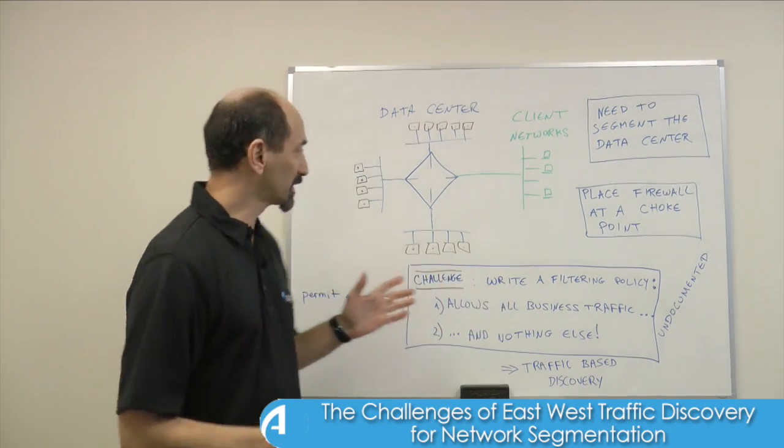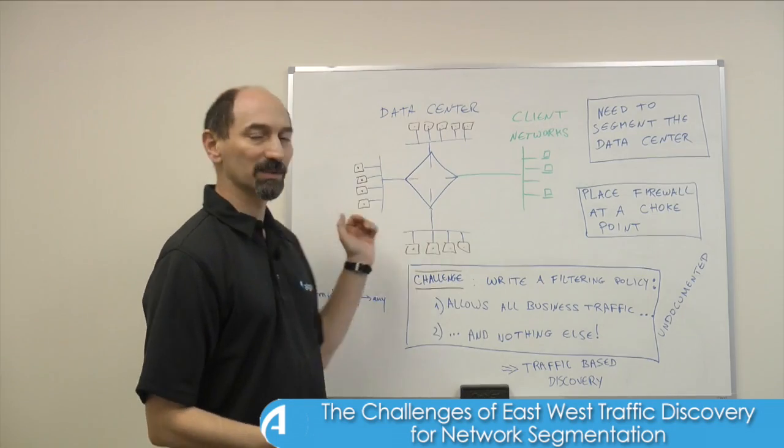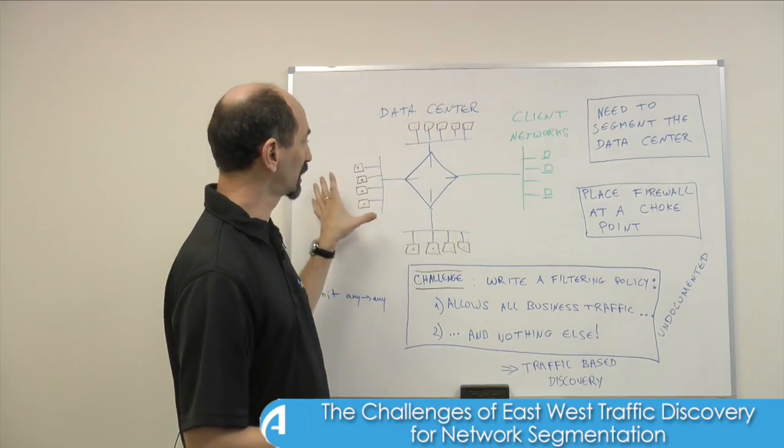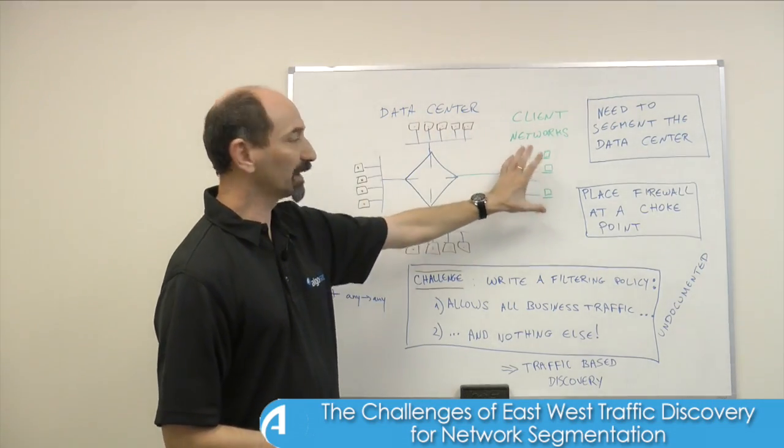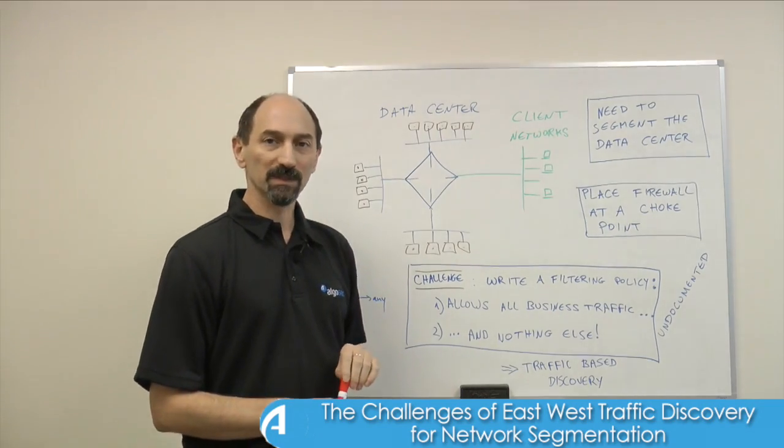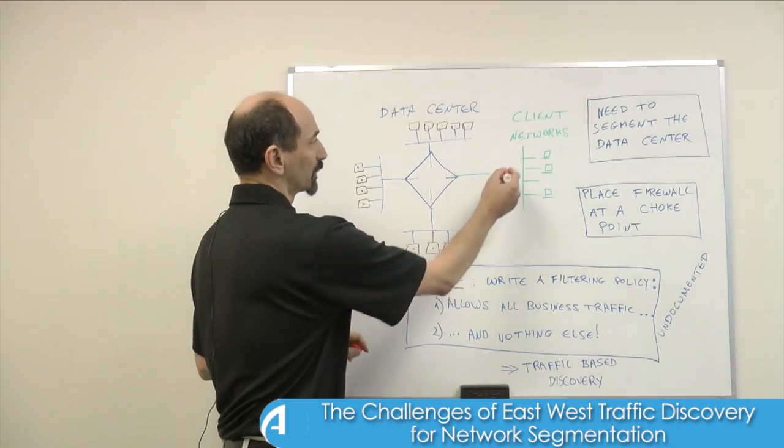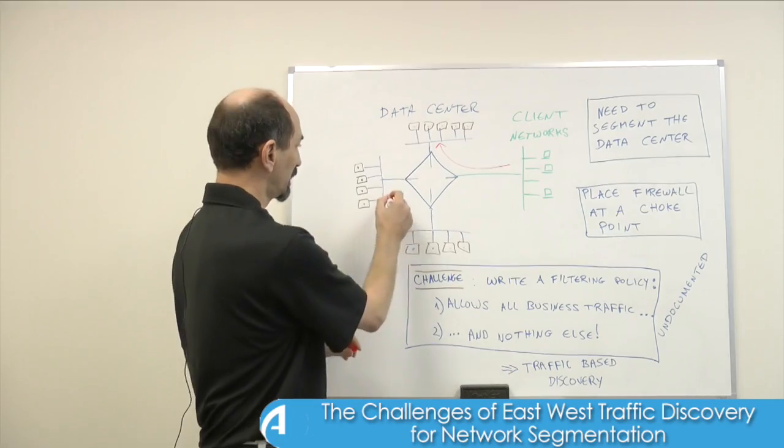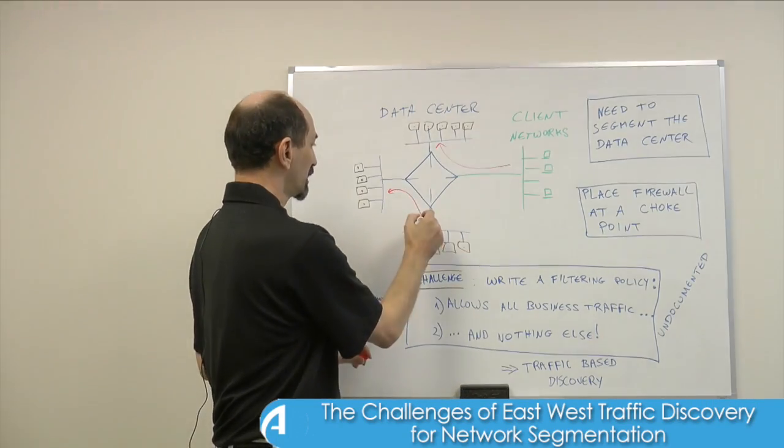So our starting point is you have a data center. You have all kinds of servers in the data center and you have some client networks outside the data center connecting to these servers. There's communication going on from the clients to the servers and possibly among the servers themselves.